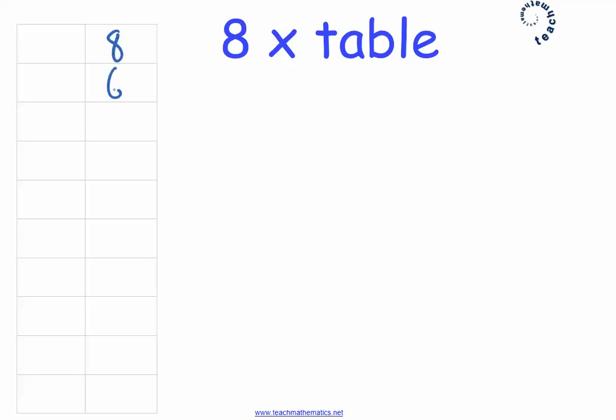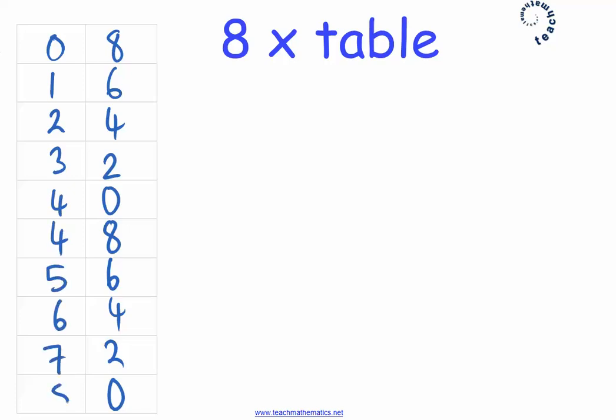I'm going to write down the even digits in reverse order, and I'm going to do that a second time. Then I'm going to write down the digits 0 to 9 and repeat the 4. The 4 is the only number that I'll write down twice. There's the eight times table.